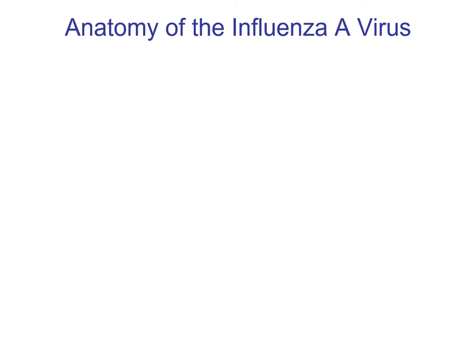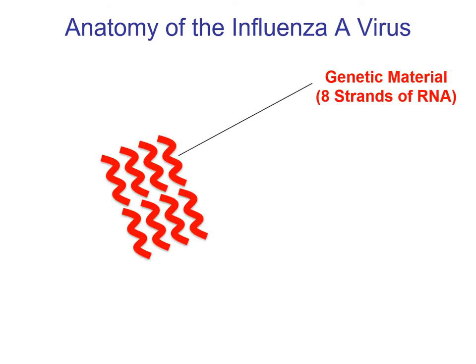Let's talk a little bit about the influenza virus. Influenza is a very important virus - it infects people worldwide many times and we did have a pandemic back in 2009 that we were very worried about. The influenza virus is very particular in that it has eight pieces of RNA as its genome - eight strands of RNA encoding ten genes.